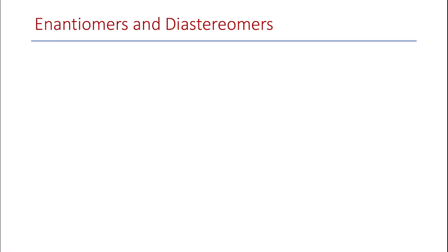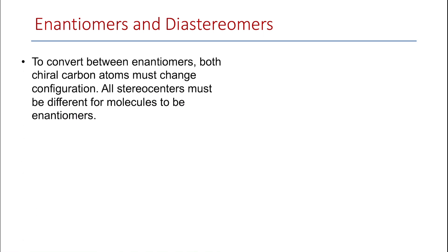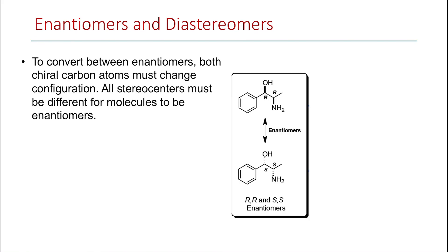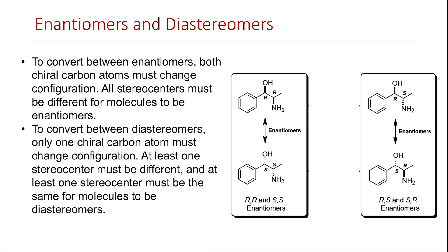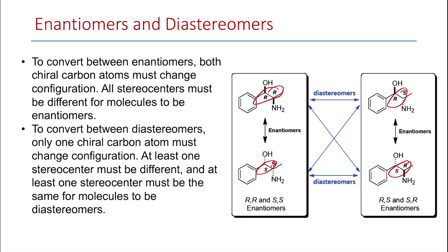To convert between enantiomers, both chiral carbon atoms must change their configuration — all stereocenters must be different for molecules to be enantiomers. So for ephedrine, R,R and S,S are enantiomers, and R,S and S,R are enantiomers. To convert between diastereomers, only one carbon has to change its configuration while the second stays the same. So R,R is a diastereomer of R,S and S,R, while S,S is also a diastereomer of R,S and S,R.